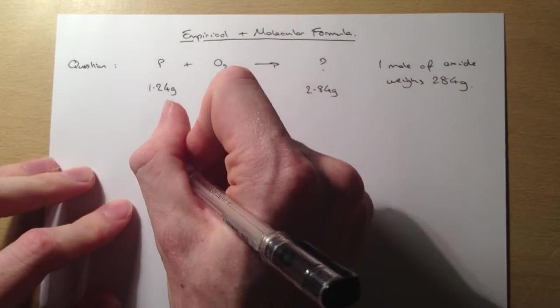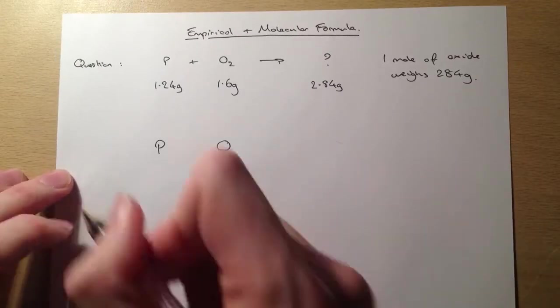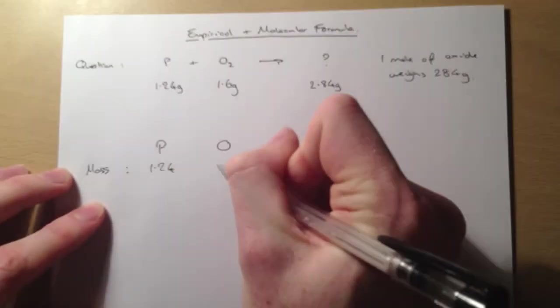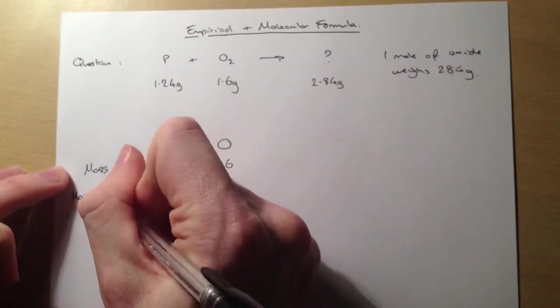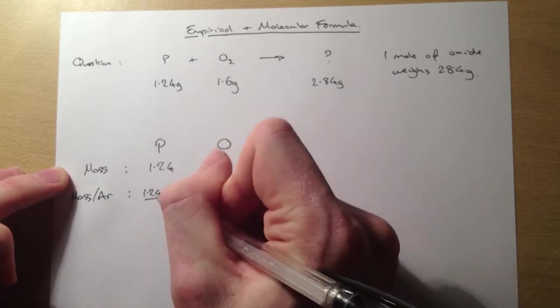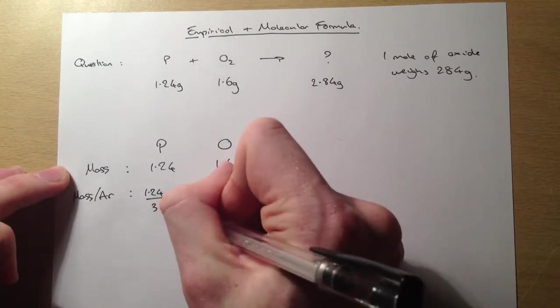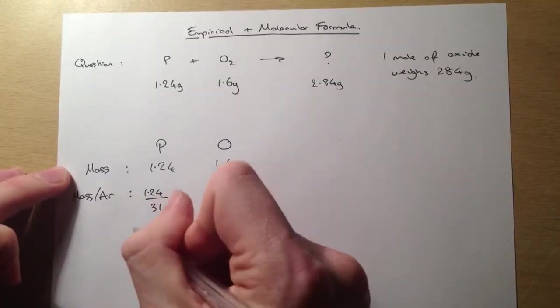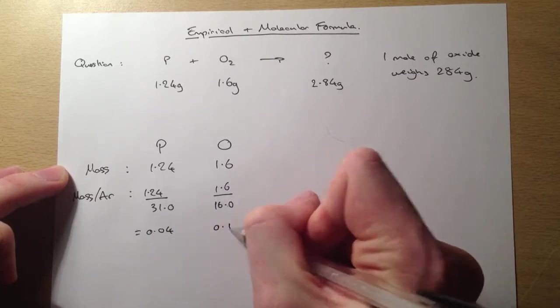Now that we know that, we can go through our simple way of working out empirical formula using this table. So the mass, first of all, we've got 1.24 grams of phosphorus reacting with 1.6 grams of oxygen. The next step is to do the mass divided by the relative atomic mass. So it'll be 1.24 divided by the relative atomic mass of phosphorus, which is 31.0. We've got 1.6 grams divided by 16.0 because that's the relative atomic mass of oxygen. When we do that, we get 0.04 for phosphorus and 0.1 for oxygen.